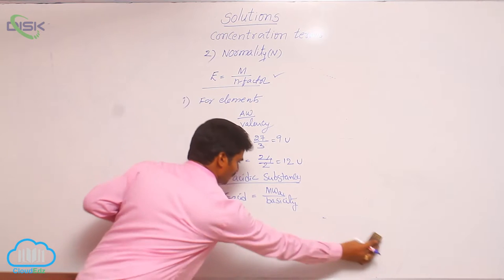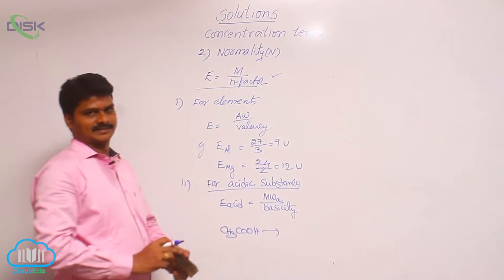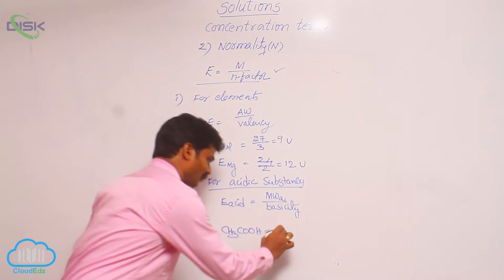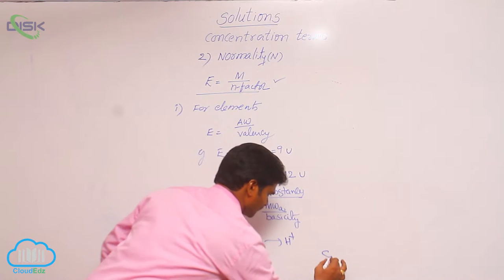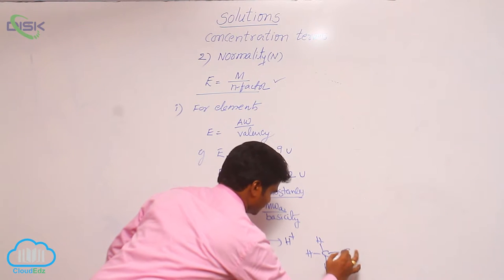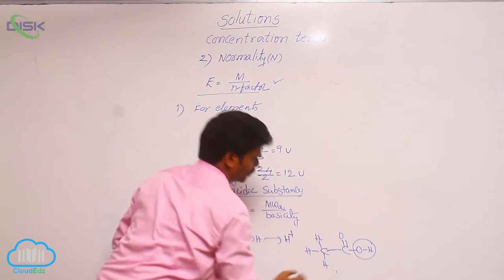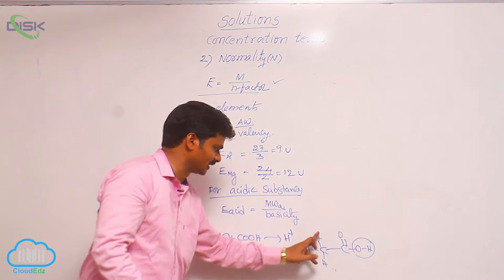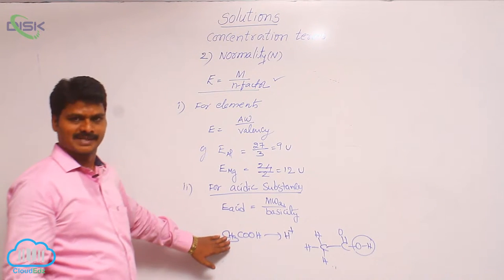One more example: acetic acid, CH3COOH. In acetic acid, there are 4 hydrogens total but it can give only 1 H⁺, so its basicity is 1. From the structure — CH3C(=O)OH — there is only 1 OH group. The hydrogen on that oxygen is liberated as H⁺, not the other 3 hydrogens. That is why its basicity is 1, meaning n-factor is 1.